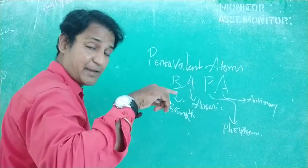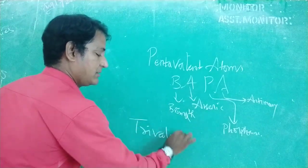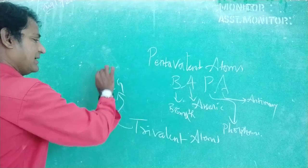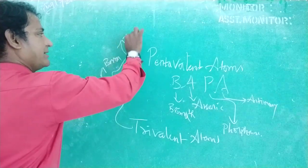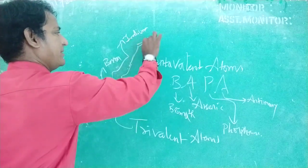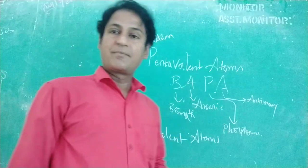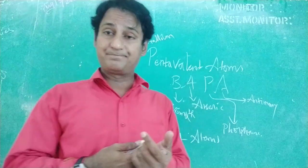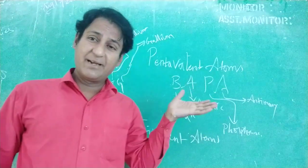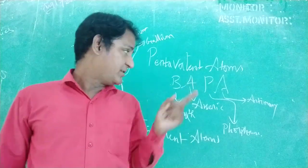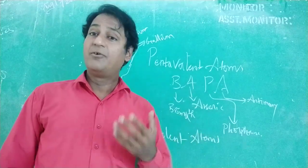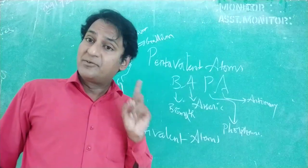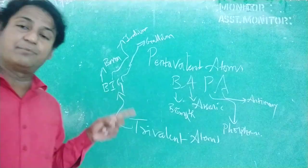The other impurity atoms are trivalent atoms. The mnemonic for them is BIG: B for boron, I for indium, G for gallium. A pentavalent atom has five valence electrons — bismuth, arsenic, phosphorous, and antimony all have five valence electrons. Trivalent atoms have three valence electrons — boron, indium, and gallium have three valence electrons.